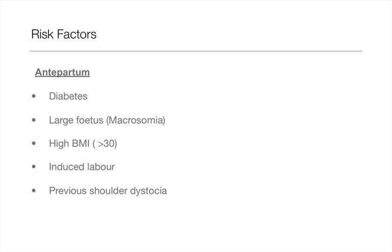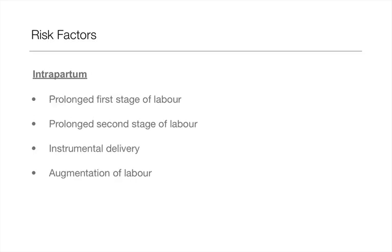Mothers with a high BMI also often have diabetes during pregnancy. Additionally, if the mother has had a previous shoulder dystocia birth then this can be an increased risk for the next birth. Risk factors during labour often occur if there is a prolonged first or second stage of labour, i.e. when the mother has been pushing for a long time. Instrumental deliveries such as ventouse and forceps can increase the risk, as can augmentation of labour where oxytocin has been given to increase contractions.